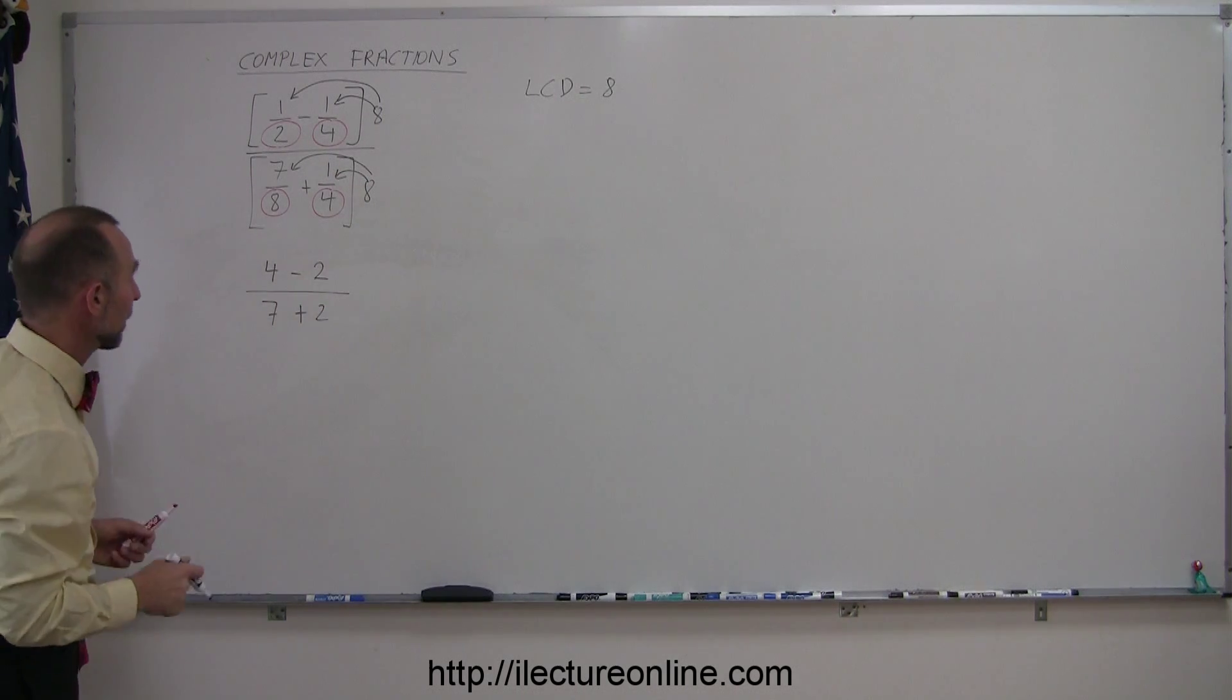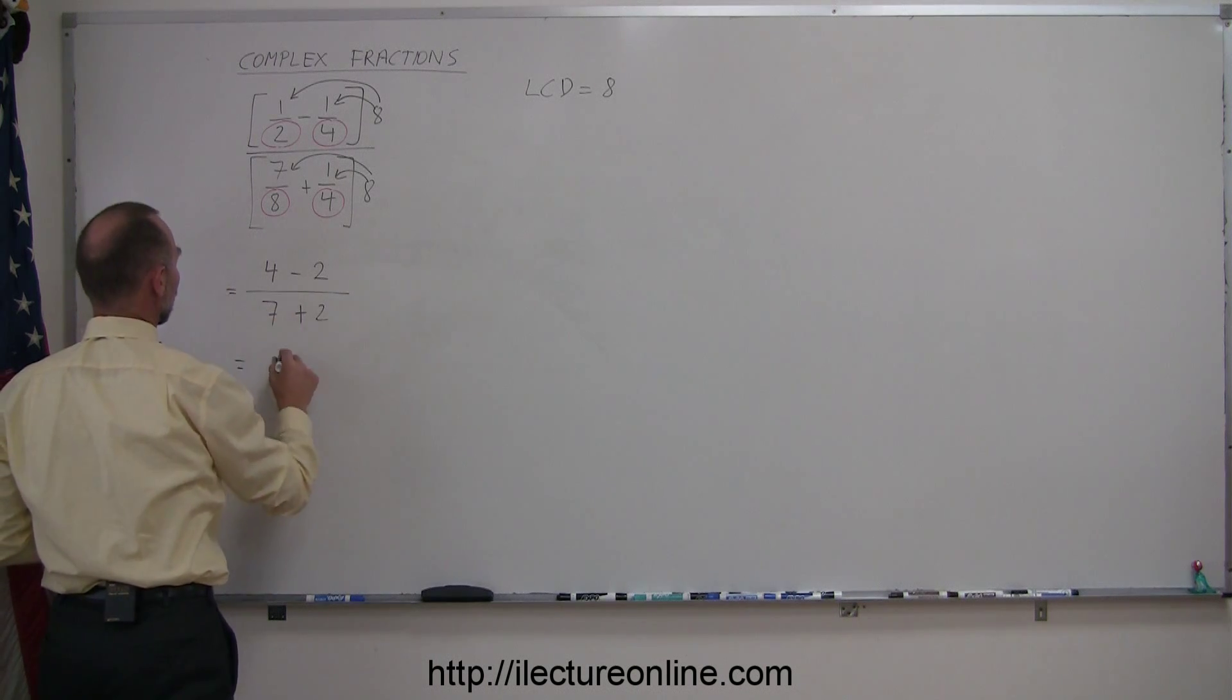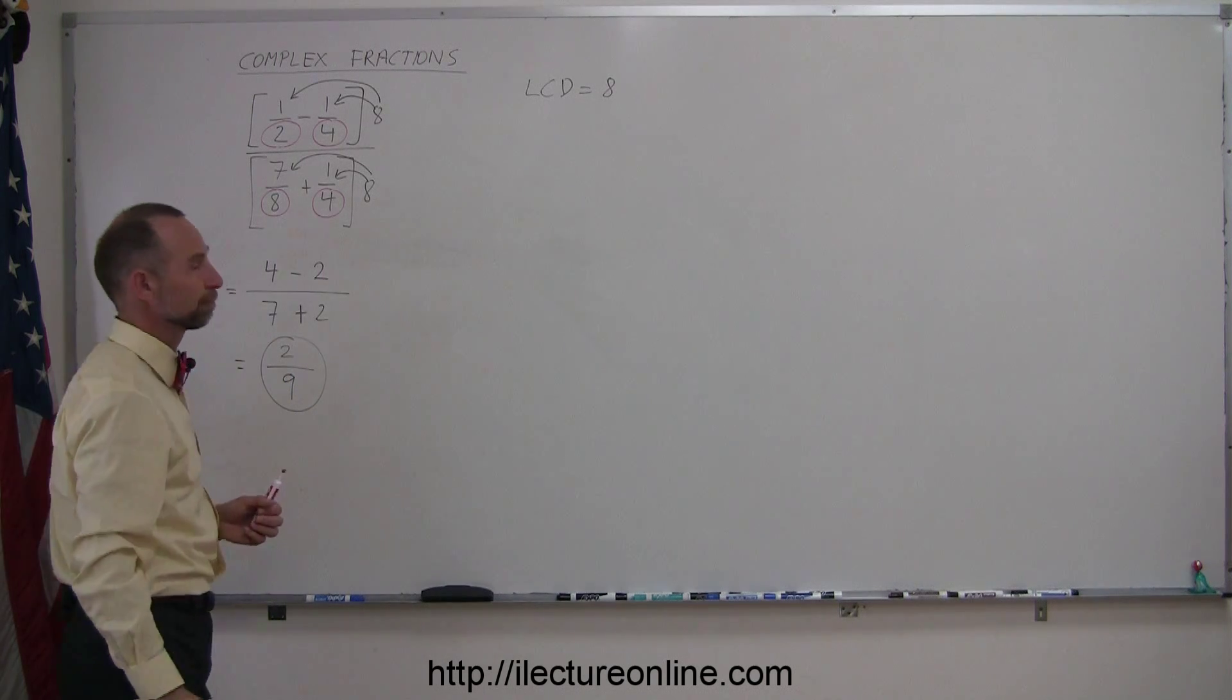And now we just have to combine terms. So this is equal to 4 minus 2 which is 2, and 7 plus 2 which is 9, and the answer is 2 ninths.